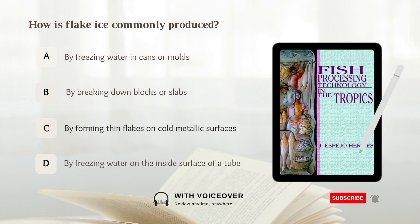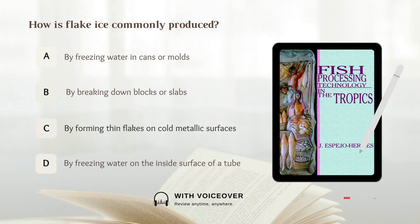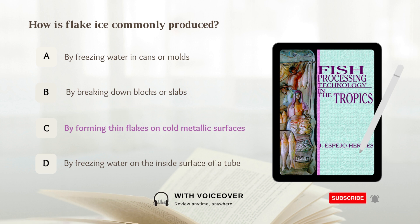How is flake ice commonly produced? A. By freezing water in cans or molds. B. By breaking down blocks or slabs. C. By forming thin flakes on cold metallic surfaces. D. By freezing water on the inside surface of a tube. The answer is C — flake ice is commonly produced by forming thin flakes on cold metallic surfaces.